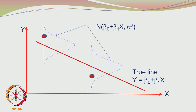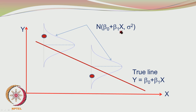Looking at that figure: we have the true line and data scattered around it due to experimental error. The scatter is described by normal distributions whose means are given by the equation β₀ + β₁x, changing with x, but with constant variance σ². This is the σ² we use in the variance-covariance matrix.